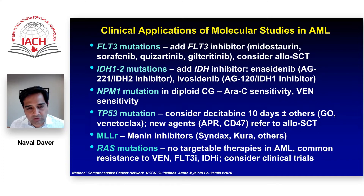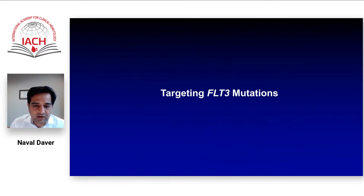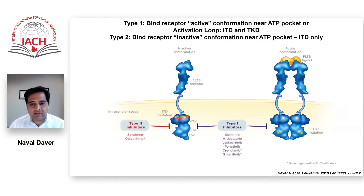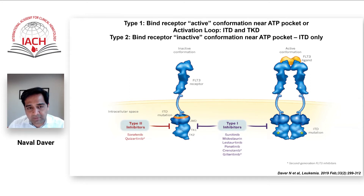Hopefully with ongoing trials, we will have some success in the next couple of years. So first, talking about FLT3, and the reason I think this is the most important is because it's also the most common in AML. FLT3 mutations make up about 30% to 35% of all acute myeloid leukemia.